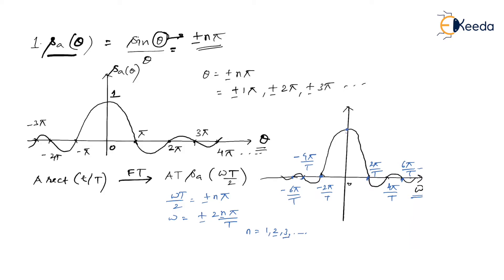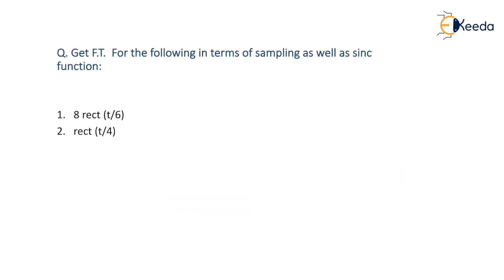To express the result in terms of sinc: since Sa(θ) = sinc(θ/π), the Fourier transform of 8·rect(t/6) = 48·sinc(3ω/π). So we have both forms: 48·Sa(3ω) in terms of the sampling function, and 48·sinc(3ω/π) in terms of the sinc function.